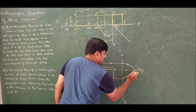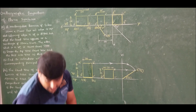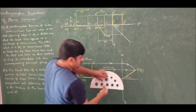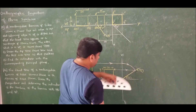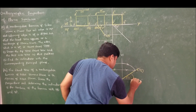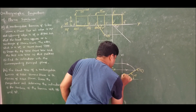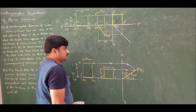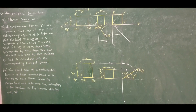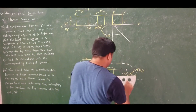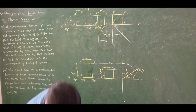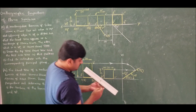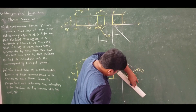These types of problems should be solved like this. How much is the inclination? Measure the inclination. The inclination is found to be 40 degrees and 50 degrees. For the side view, I want a 45-degree line. Mark the 45-degree line and take the side view projection to get the top view of this rectangular lamina.